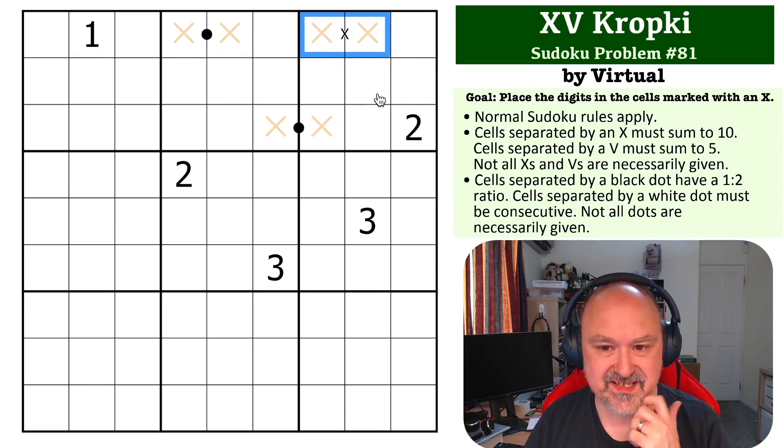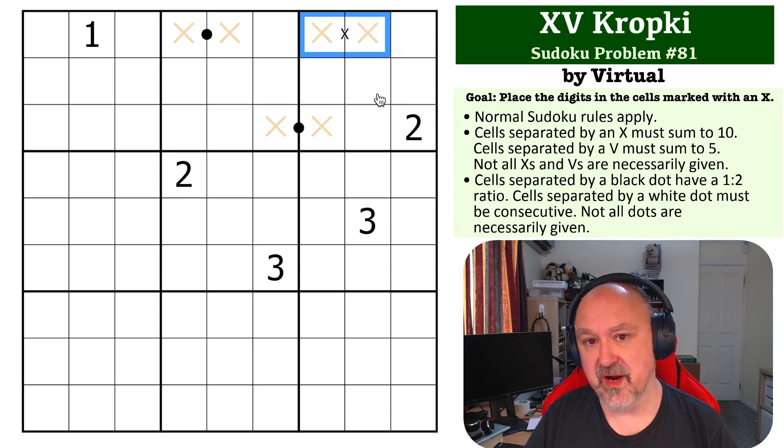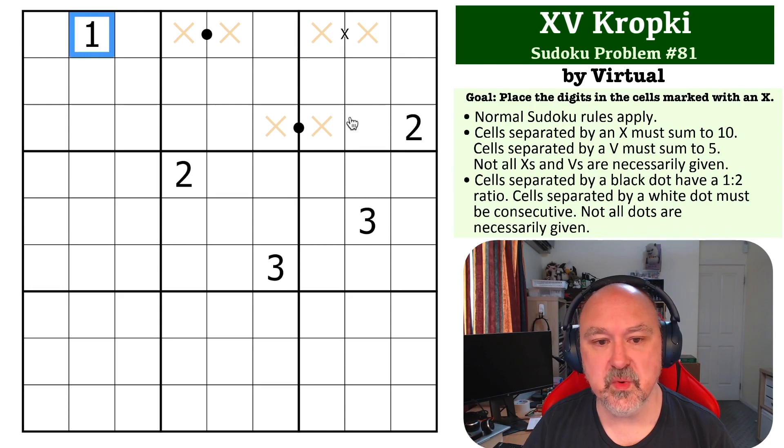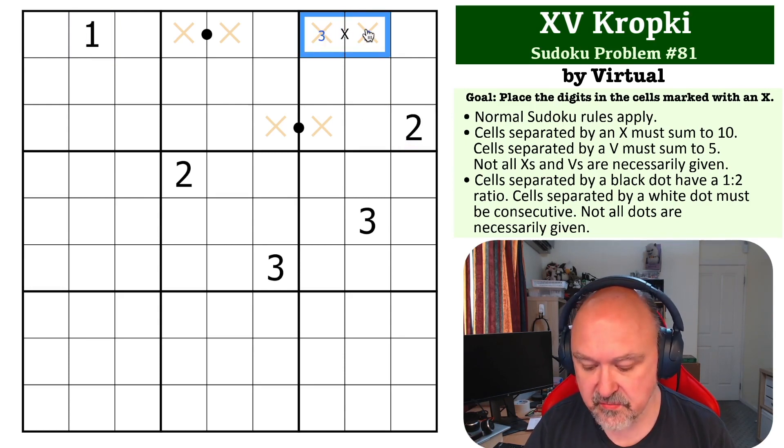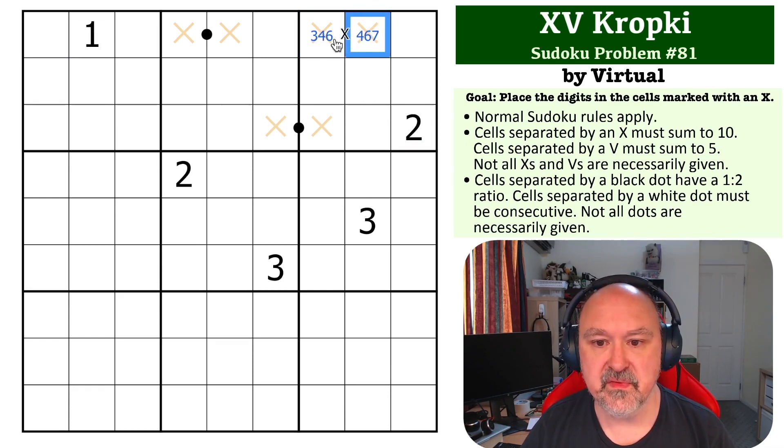Any X clue must have a low and a high digit. The only way you can make sum to 10 in two cells is with 1-9, 2-8, 3-7, or 4-6. But you cannot put a 1 on this because there's a 1 in the row, and you cannot put a 2 on it because there's a 2 in the box. So this is either 3-7 or 4-6. You can't put a 7 there but that's not really what matters here.